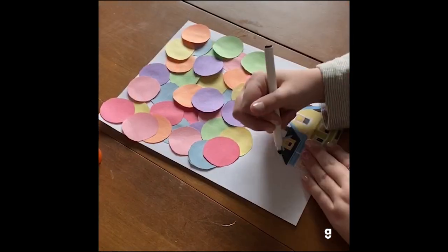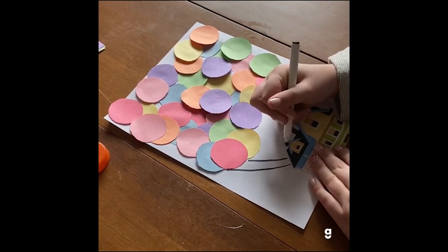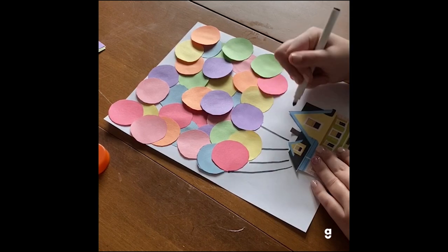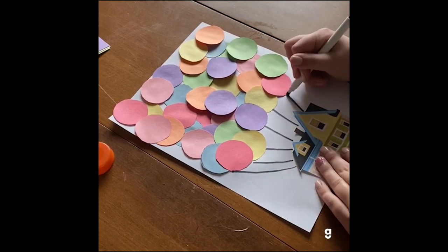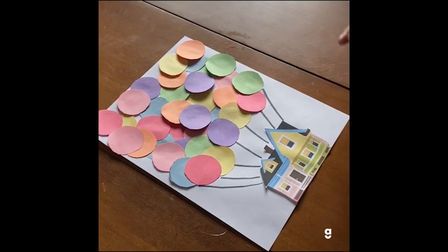Okay and then our last step is just connecting the strings to the bloom. And then I usually just try to do it for the bottom blooms. And there you have it. There is your up house.